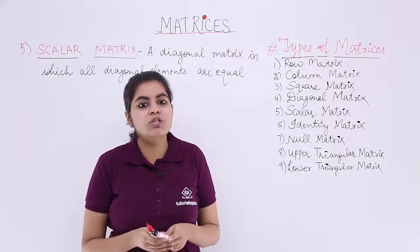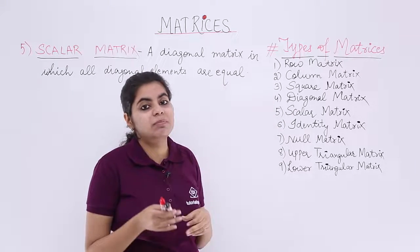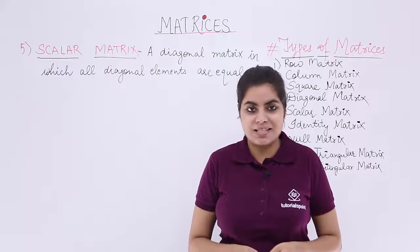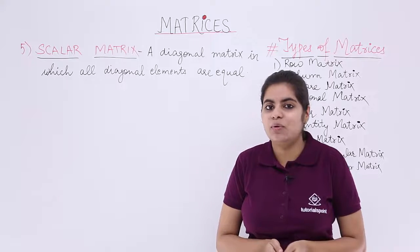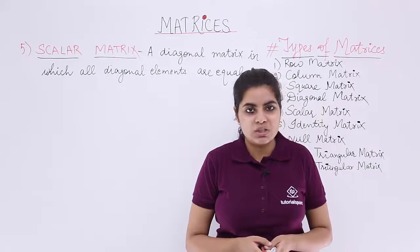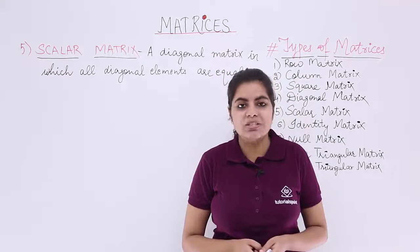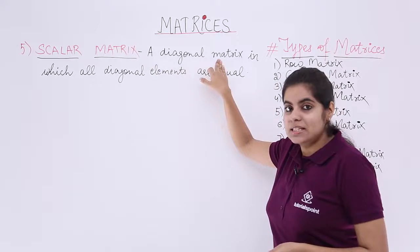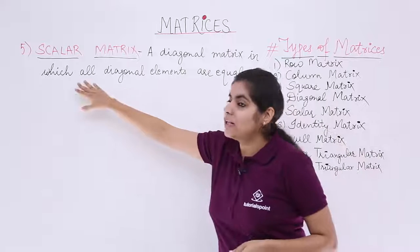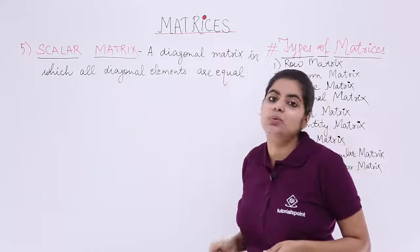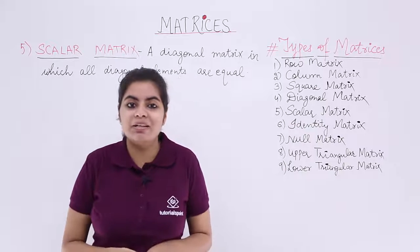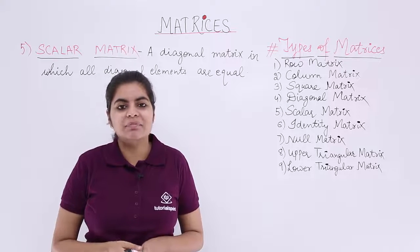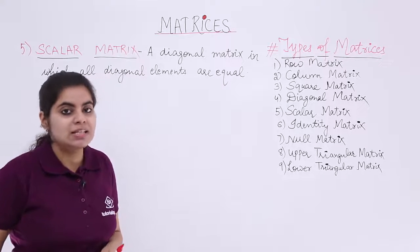We already know what we mean by square matrix and diagonal matrix, and hence we will be using the concept of square and diagonal in this scalar matrix. Let's see what the definition has to say, and then we'll understand it with the help of mathematical representation and one to two examples. A scalar matrix is a diagonal matrix in which all the diagonal elements are equal.